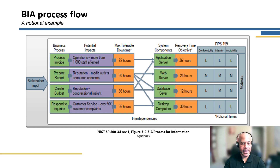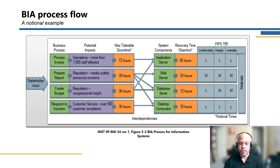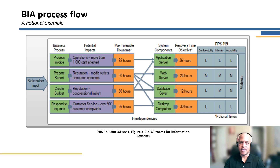Here's an example of a BIA process flow from NIST 800-34. On the left you see the business process identified — taking the first one as an example, processing invoices — with a potential impact of more than 1,000 staff affected. The MTD is 72 hours, and it impacts the application server as a system component. It has a recovery time objective of 36 hours, so the requirement is for the system to be recovered within 36 hours. Anything exceeding that up to 72 hours will be a material impact to the organization. As you can see with the other examples, multiple components can support different business processes.